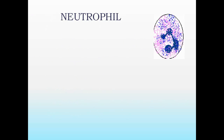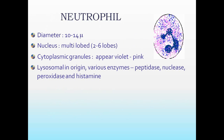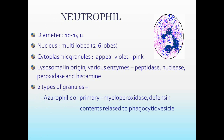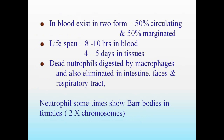When we see the detailed morphology of neutrophil: diameter is about 10 to 14 microns. Nucleus is multilobed — lobes vary from 2 to 6. Cytoplasmic granules appear violet or pink, lysosomal in origin, containing various enzymes — peptidase, nuclease, peroxidase, and others. There are 2 types of granules: primary or secondary granules. In blood, they exist in 2 forms: 50 percent circulating and 50 percent marginated.